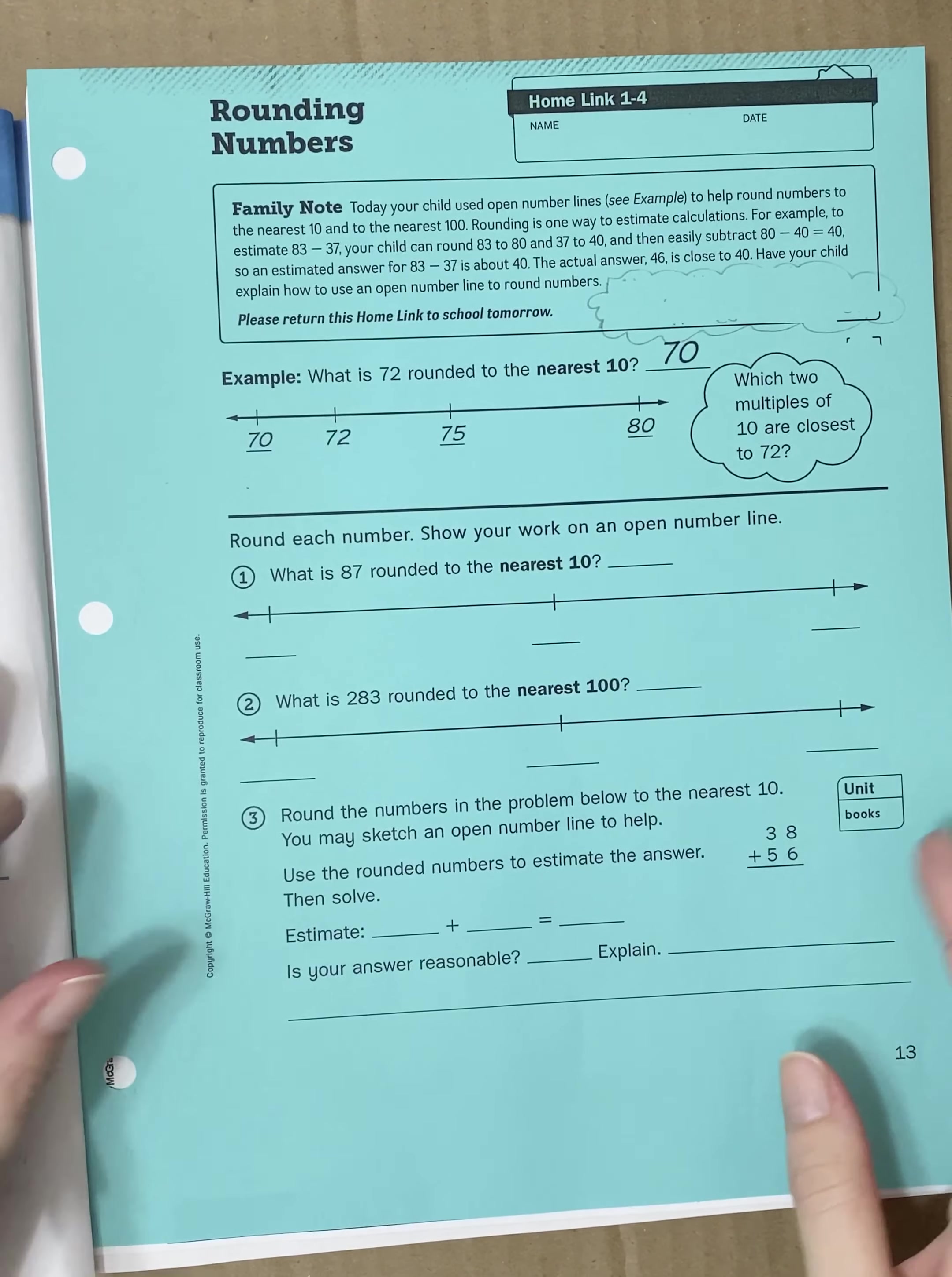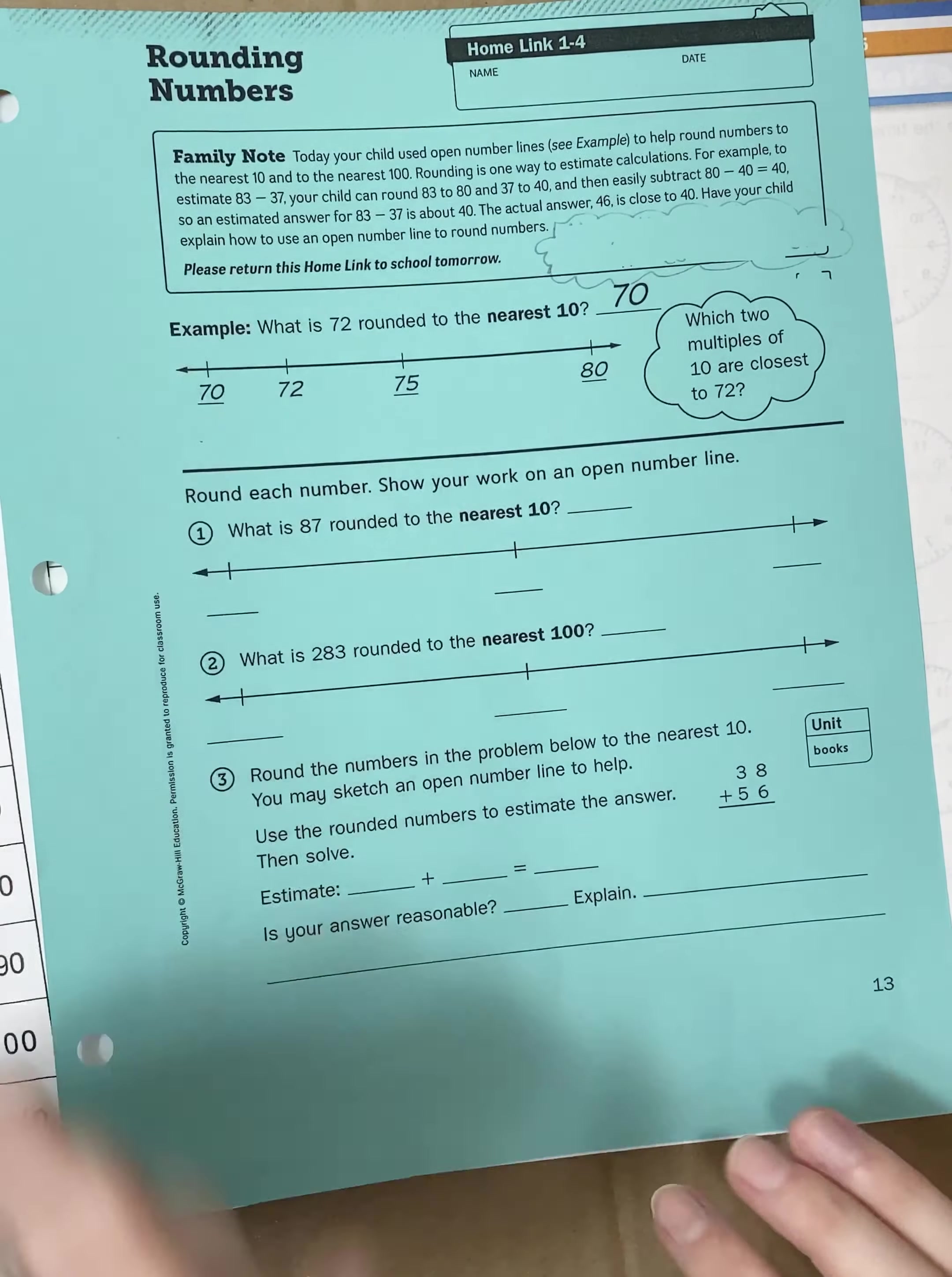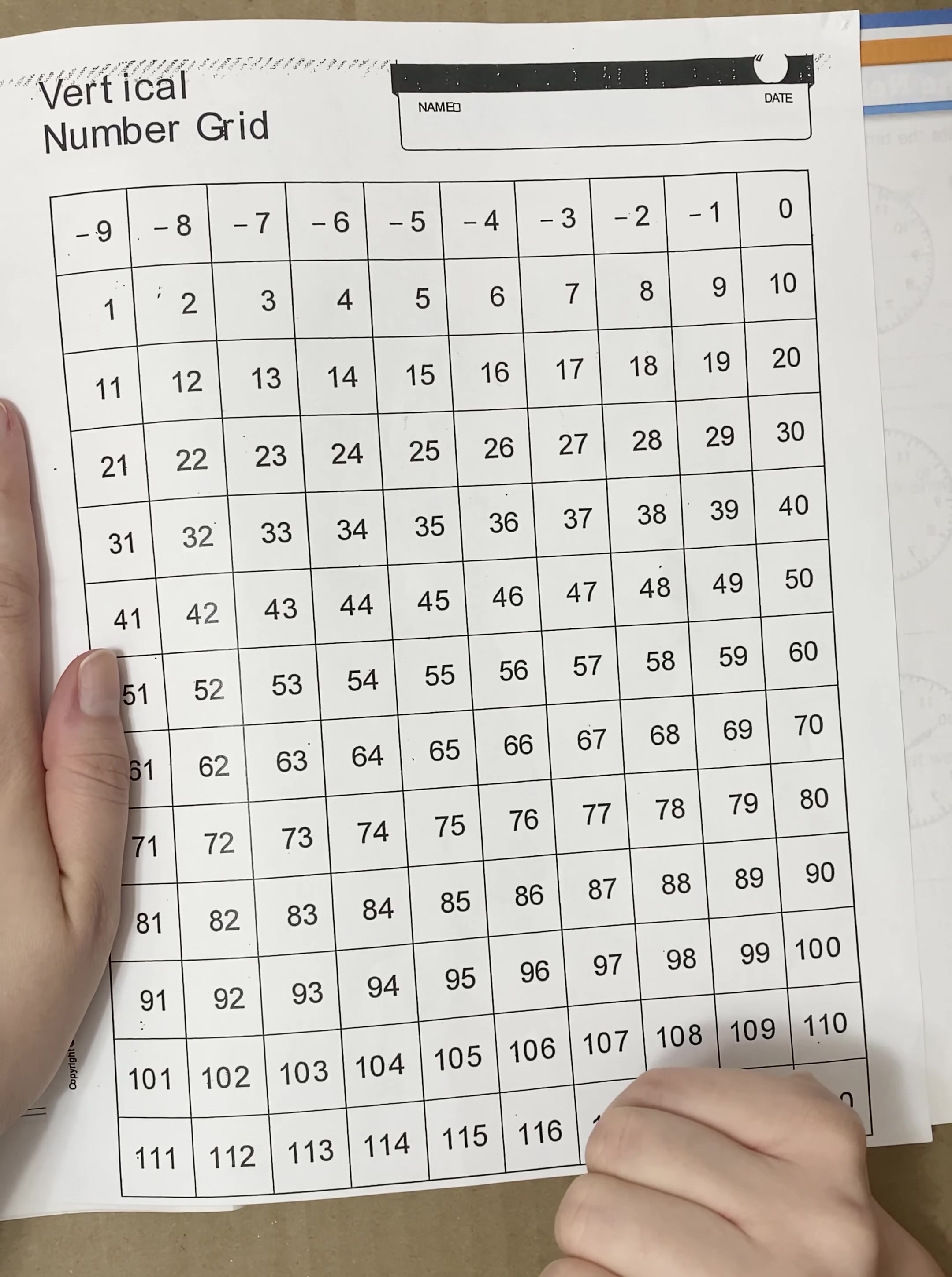Hello third graders. Today's math lesson is lesson 1-4. You will need to make sure that you are on page 6 in your math journal. This is the page we'll be doing together in a little bit. Also a paper you will need later is your rounding numbers homelink, homelink 1-4. This is what you will be doing later on your own and this is the paper that you will need to submit to Google Classroom when you are done. Another helpful paper that I like for today's lesson is to have your number grid here because this could be very helpful with rounding today.